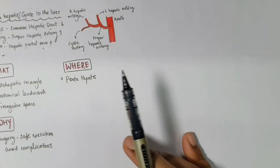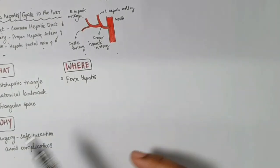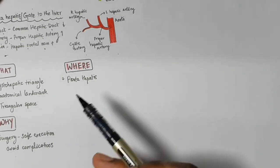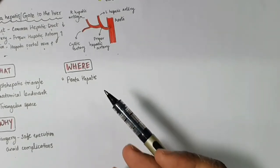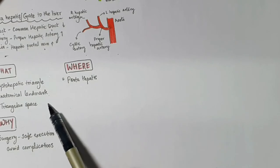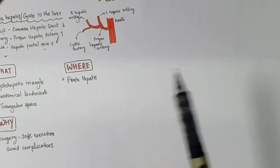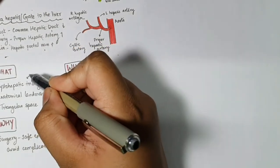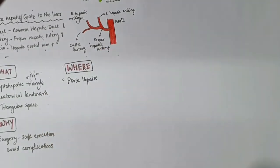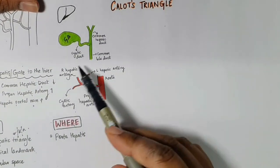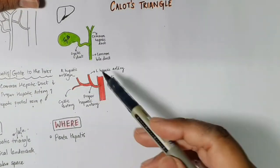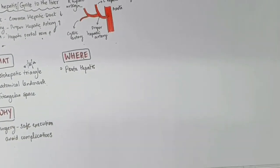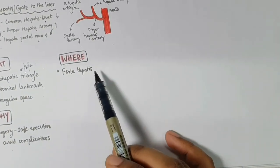Let's address three basic questions: what, where, and why. What is the Calot's triangle? It's an anatomical landmark — a triangular space also known as the cystohepatic triangle, because it's in relation to the gallbladder and the hepatic structures. Where is it located? At the porta hepatis.